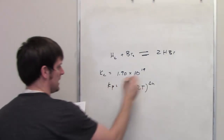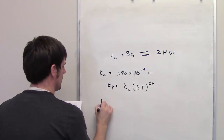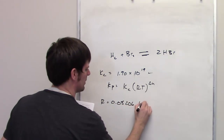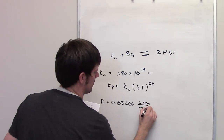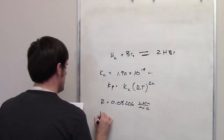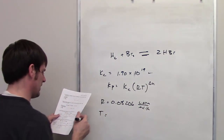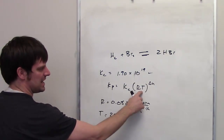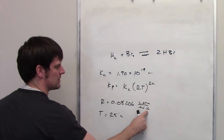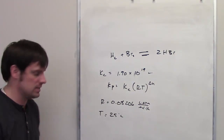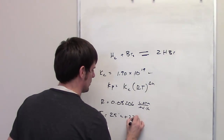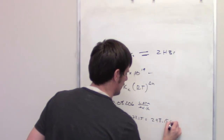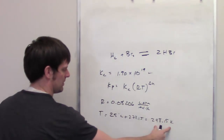We have Kc. We have to use a proper value of R, which is going to be 0.08206 liter atmospheres per mole Kelvin. The temperature, it tells us, is 25 degrees Celsius. We have to convert that to Kelvins, so we add 273.15 and get 298.15 Kelvins as our temperature.